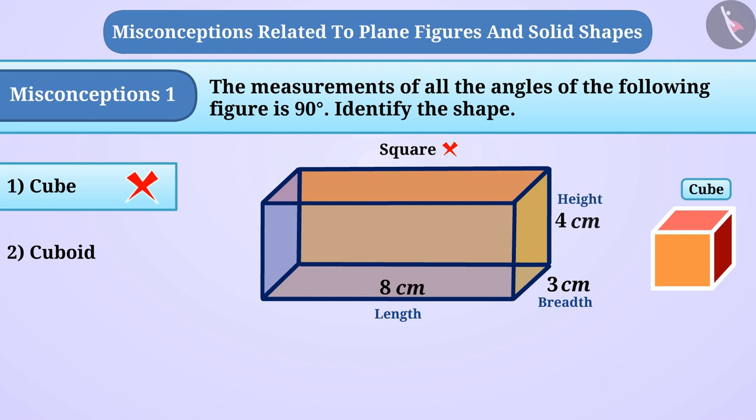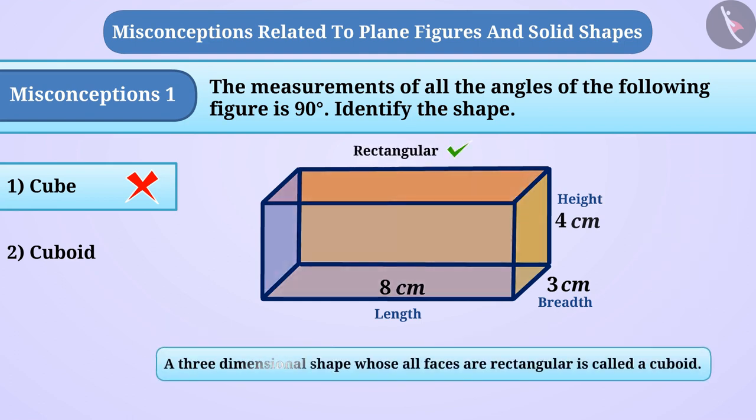All the faces of a cube are square shaped. All faces of the given shape are not square shaped, so this shape is not a cube. But its all faces are rectangular. A three-dimensional shape whose all faces are rectangular is called a cuboid, which is option 2. This means that option 2 is the right answer.